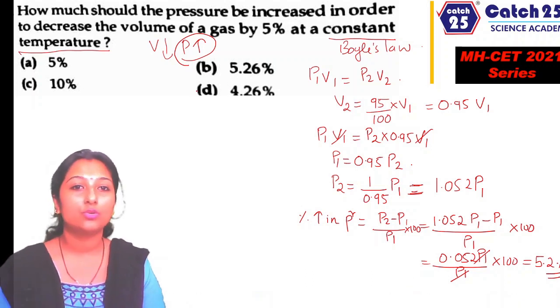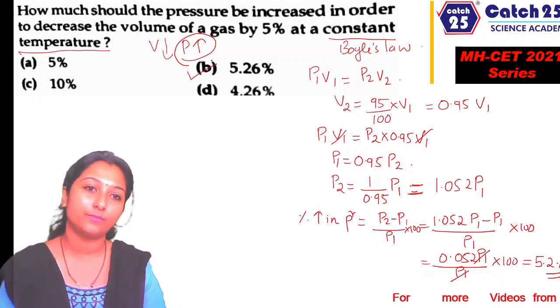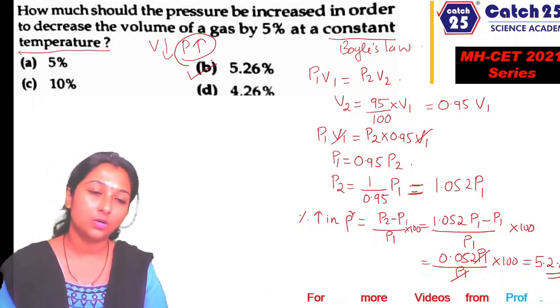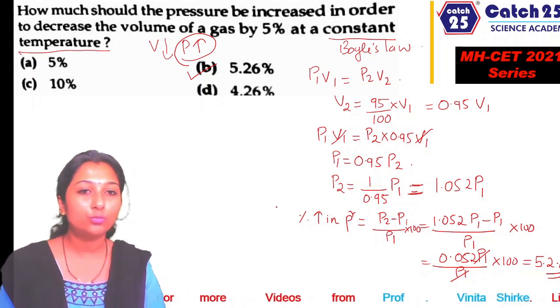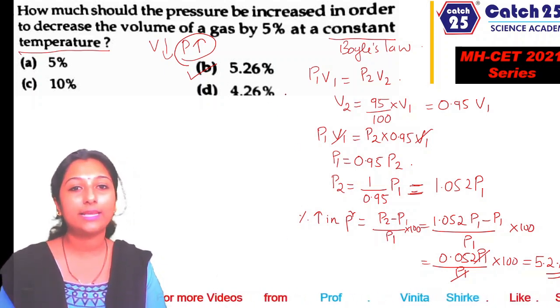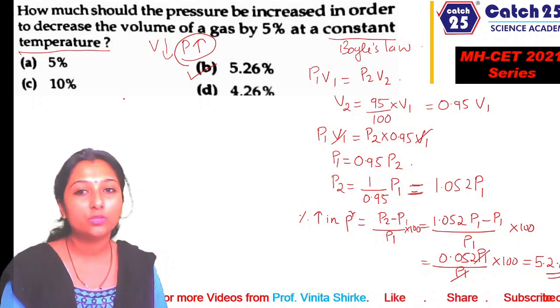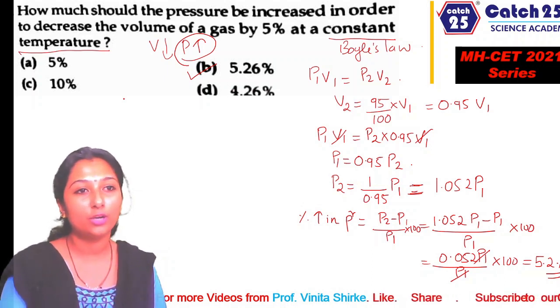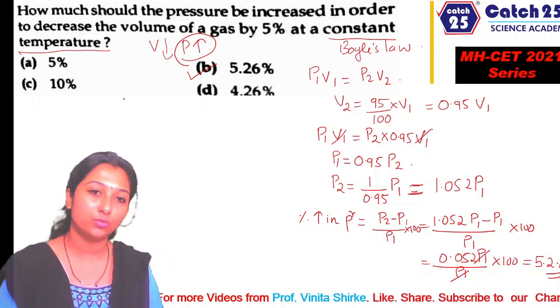So the answer is 5.2%. Note: since volume decreases, pressure must increase — this is consistent with Boyle's law.